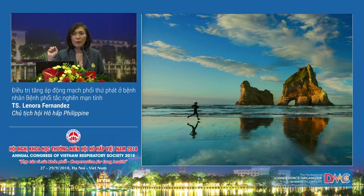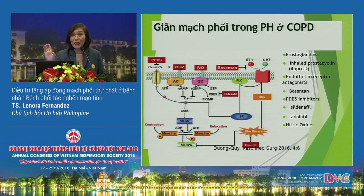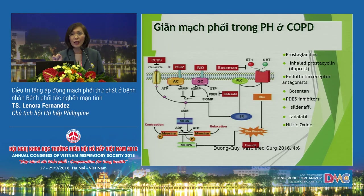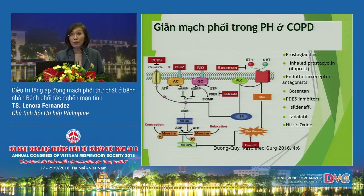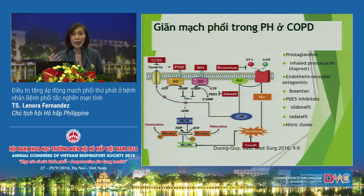Pulmonary hypertension was previously a contraindication to lung volume reduction surgery because you are further depleting the vascular bed. But current data shows that lung volume reduction surgery, through mechanical improvement in the work of breathing, somehow improves VQ matching, and there has actually been a decrease in pulmonary artery pressure among patients who underwent LVRS.